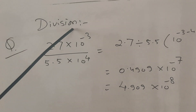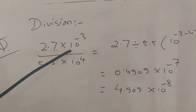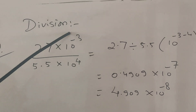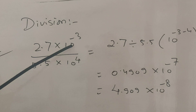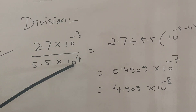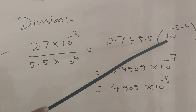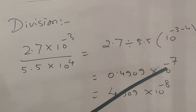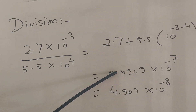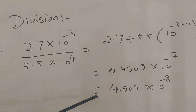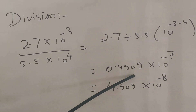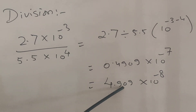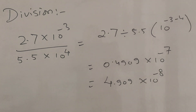For division: 2.7 × 10⁻³ divided by 5.5 × 10⁴. Using the rule 10^m ÷ 10^n = 10^(m−n): 2.7 ÷ 5.5 = 0.4909, and 10^(−3−4) = 10⁻⁷, giving 0.4909 × 10⁻⁷. Since 0.49 is less than 1, shift the decimal: the answer is 4.909 × 10⁻⁸.